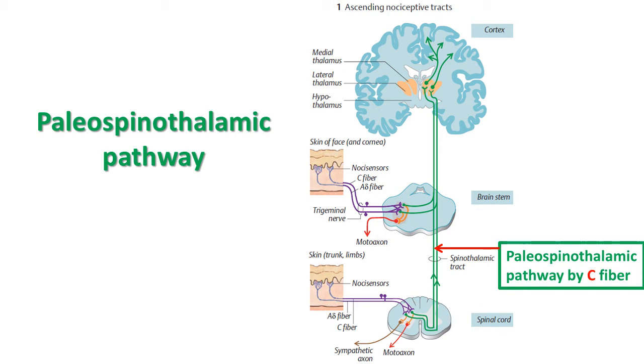Fibers also end in the cingulate gyrus, mediofrontal, and insular cortex. There is a diffuse connection of neurons in the basal brain, and this diffuse connection is responsible for the poorly localized type of slow pain.